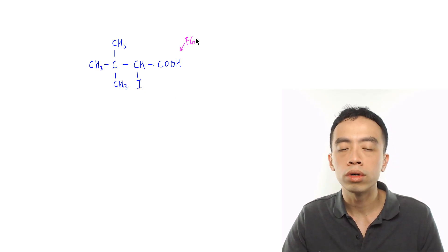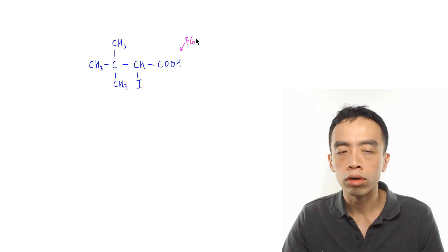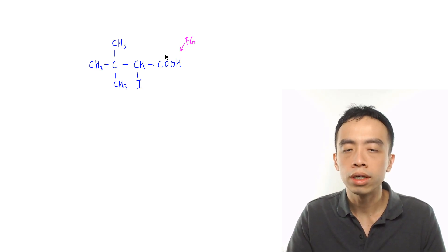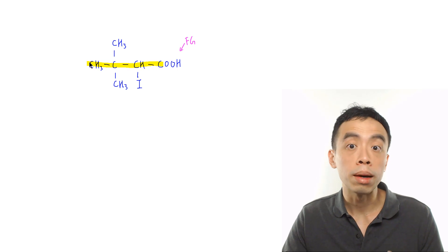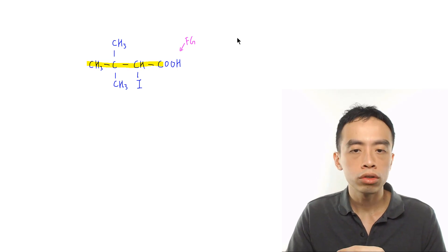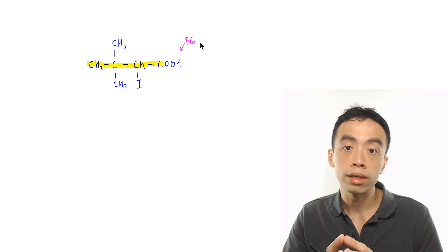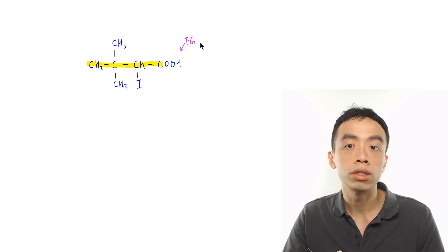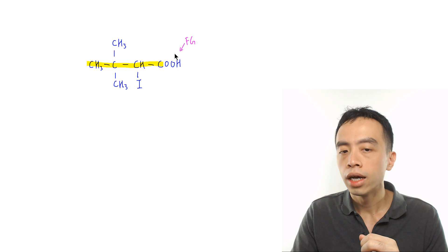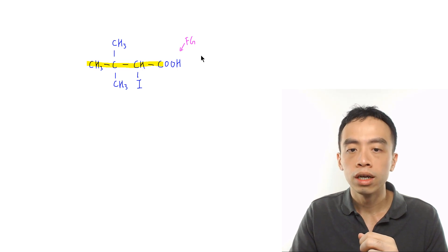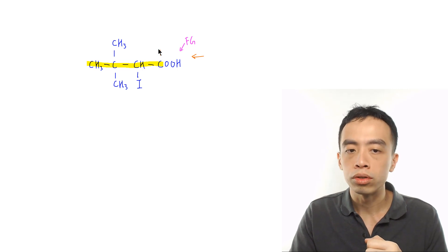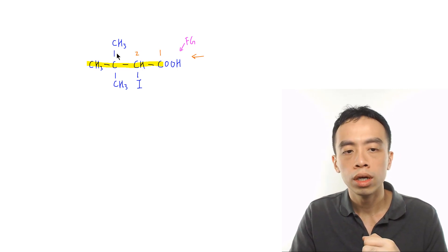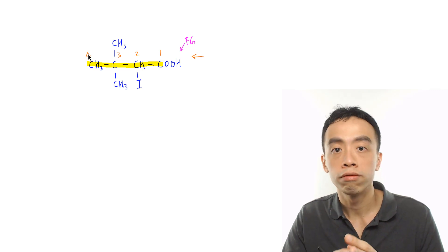The next thing we have to look out for is the longest carbon chain that contains this functional group. Starting from this carbon, I want to draw the longest possible carbon chain, which will be this four-carbon chain. Then the next thing we want to do is to number the carbon. When there's a functional group, priority must be given to the functional group and the number assigned to this functional group needs to be as small as possible. So in this case, I'll number the carbon in this way to give priority to the acid group: acid will be position one, this will be position two, this is position three, and this will be position four.